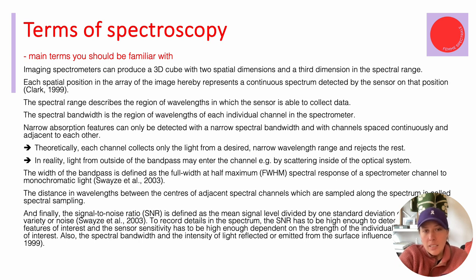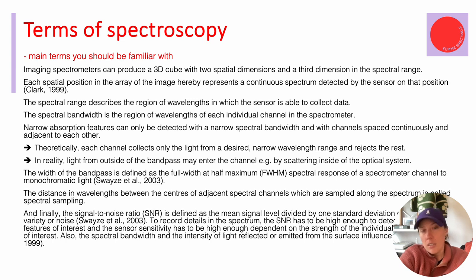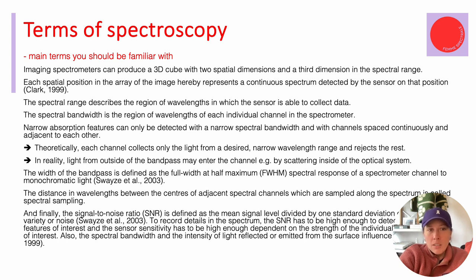In reality, that's not the case. Light from outside of the bandpass may enter the channel because of scattering in the optical system or from the surface. But theoretically, each channel represents a very specific wavelength area. The width of this bandpass is defined as the full width at half max — FWHM — which you will read quite often in publications. That's the spectral response of a spectrometer channel to monochromatic light.